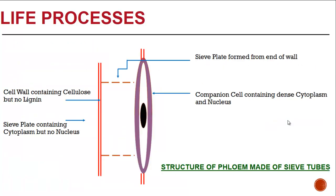Have a look at the diagram showing the structure of a phloem made up of sieve tubes. You have the cell wall containing cellulose but no lignin. You have a sieve plate containing cytoplasm but no nucleus, formed from the end walls in both directions. In the center, you have the companion cell containing dense cytoplasm and a nucleus. This is generally a breakdown of what a phloem cell looks like.